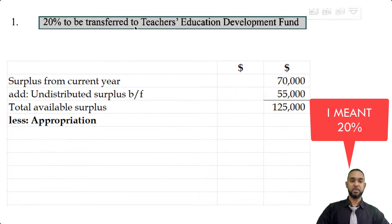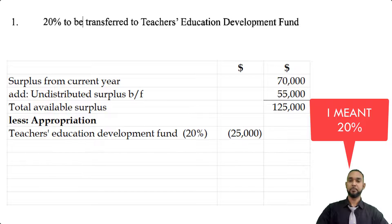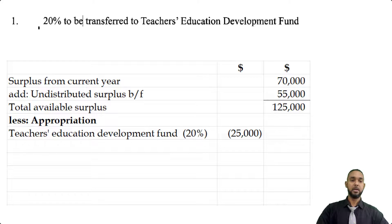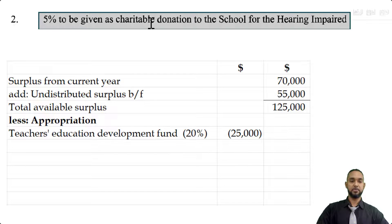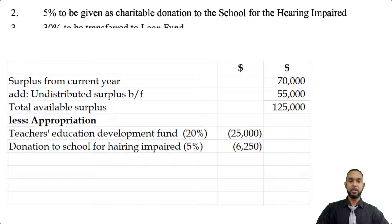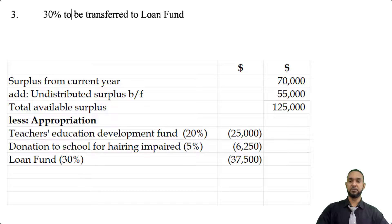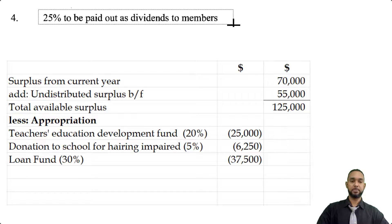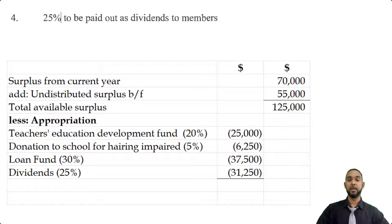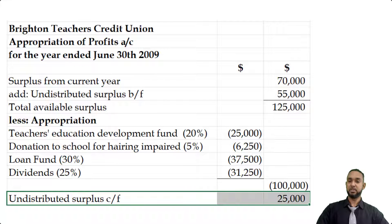We head up the Brighton Teachers Credit Union Appropriation of Profits Account for the year ended 30th June 2009. Current year surplus is $70,000, plus surplus brought forward of $55,000, giving $125,000. We transfer 20% ($25,000) to the Teachers Education Development Fund, 5% ($6,250) as charitable donation, 30% ($37,500) to the loan fund, and 25% ($31,250) as dividends to members. Total appropriations amount to $100,000, leaving $25,000 as undistributed surplus carried forward.